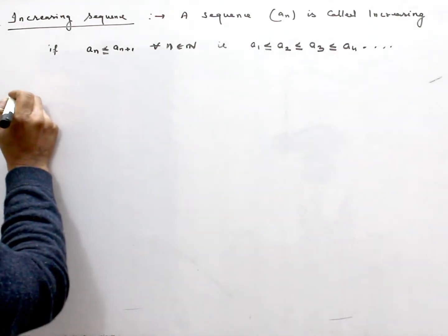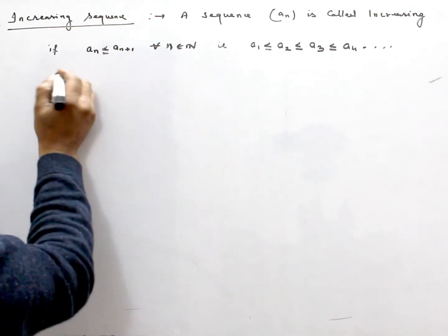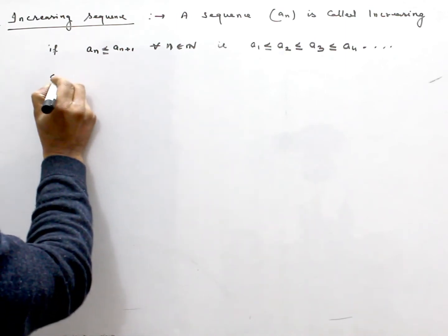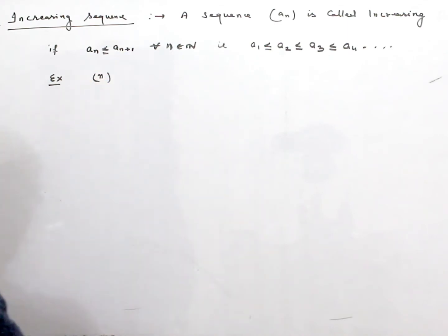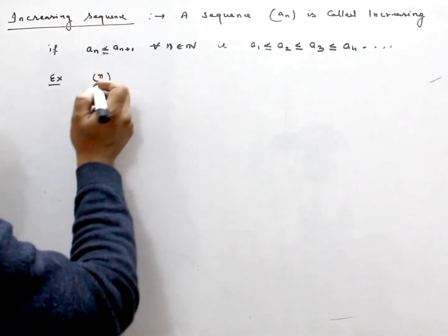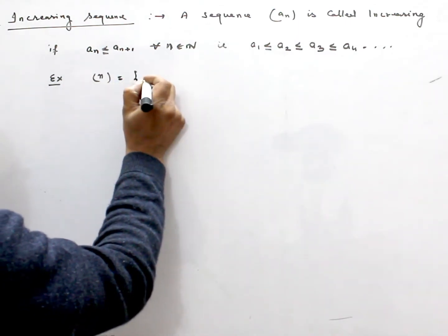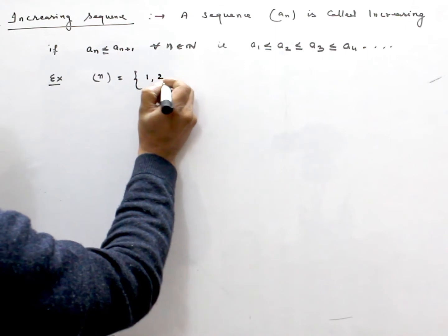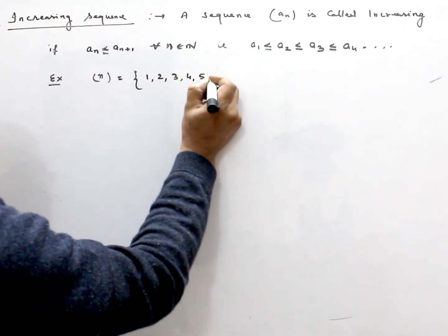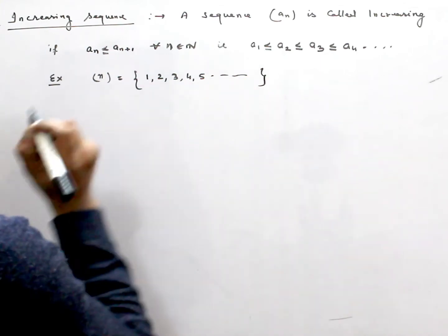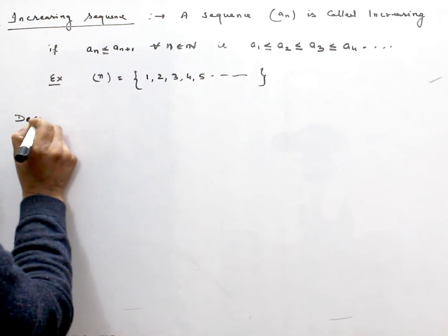An example of an increasing sequence is simply the sequence n, because the terms of this sequence are 1, 2, 3, 4, 5, and so on. Similarly, we also define a decreasing sequence.